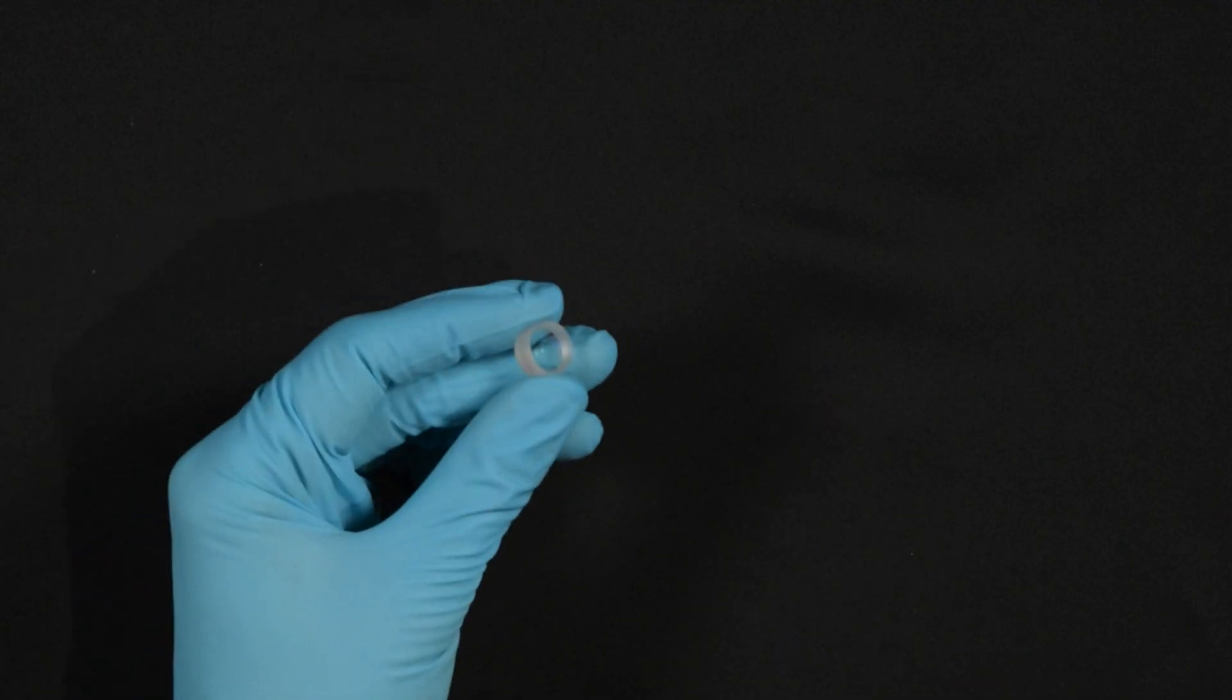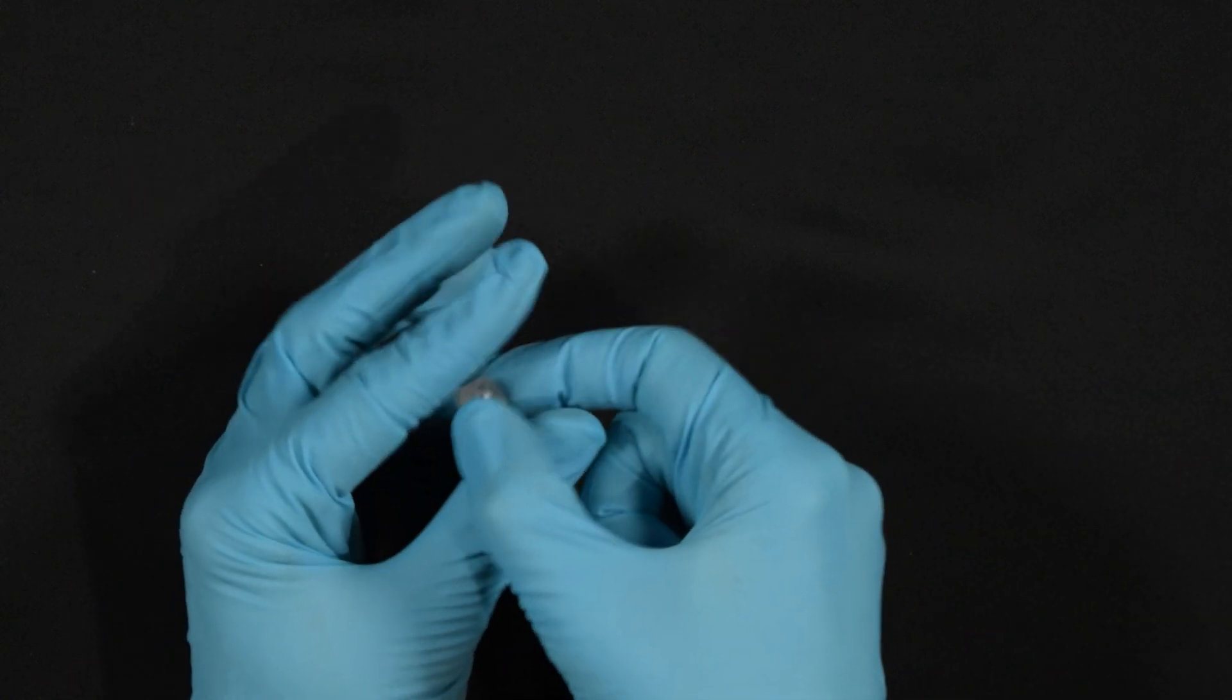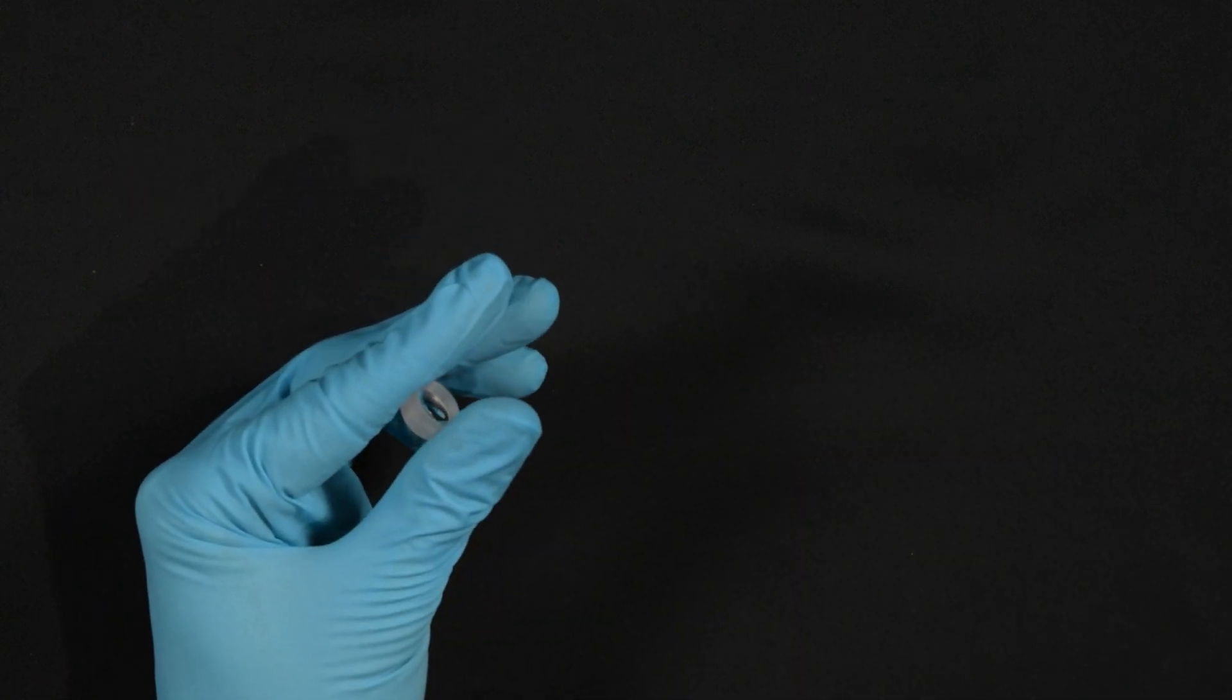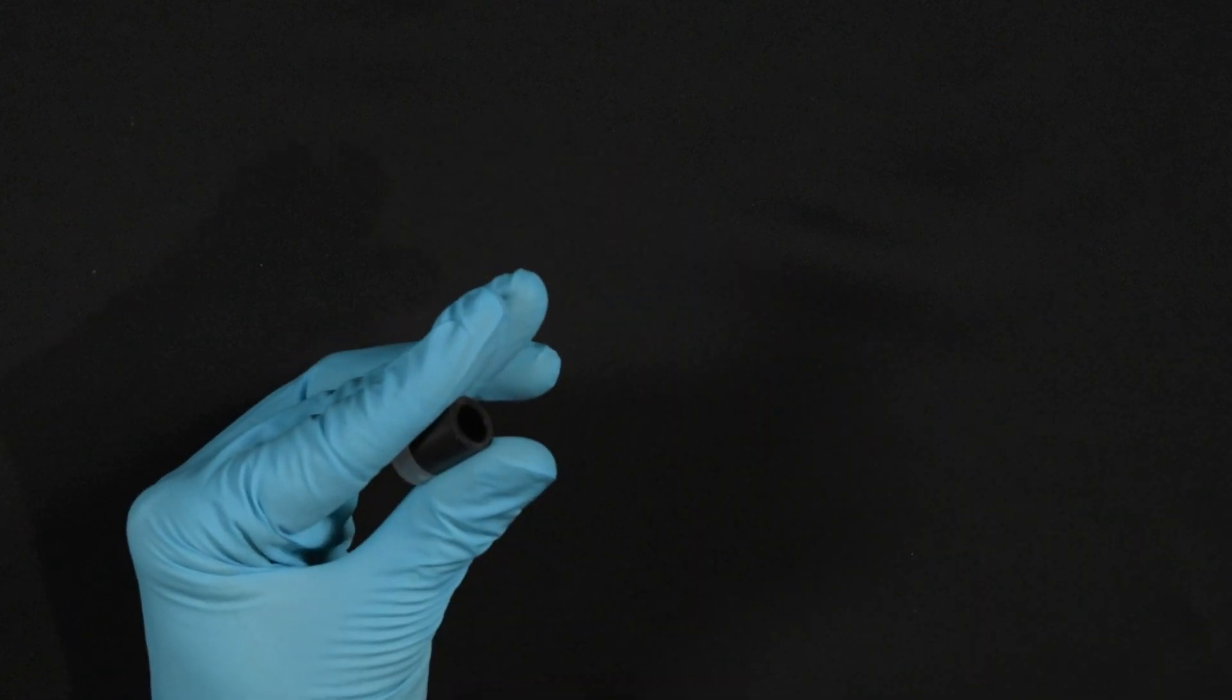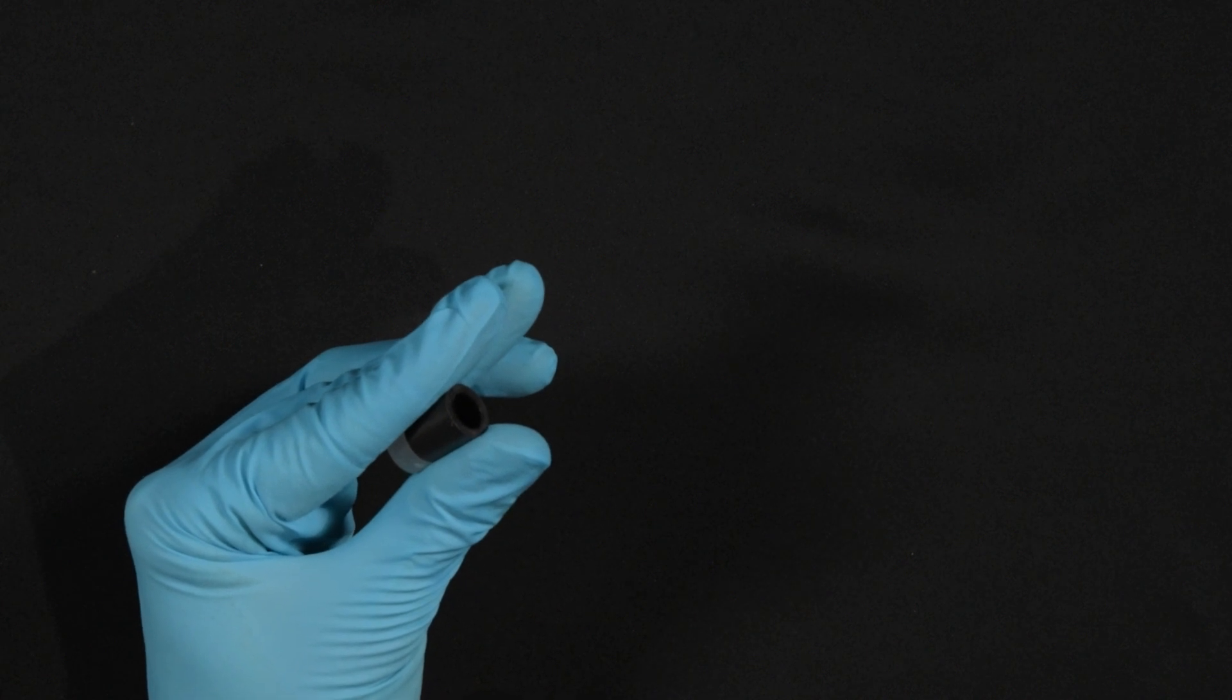First take the negative doublet and hold it between your thumb and your index with the most curved surface on top. Add on top of that the 14.7 mm spacer and add one of the plano-convex lenses with the convex side on top.